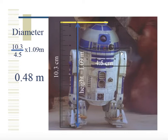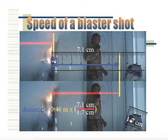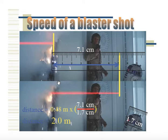Now does that make sense just looking at this picture? It does. If his height is 1.09 meters, we know his head diameter cannot be larger than 1.09 meters. In fact, looking at the picture, it looks to be about at least half the size of the height, so 0.48 meters makes sense. We take that 0.48 meters — the diameter of R2D2's head — and multiply it by 7.1 centimeters divided by 1.7 centimeters, and that gives us the distance. The blaster shot moved around 2 meters.